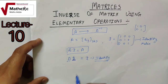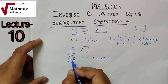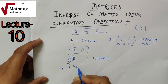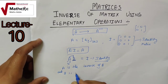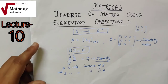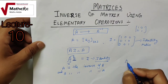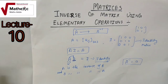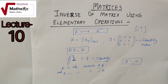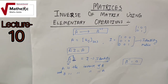For example, if I have two matrices A and B, and A multiplied by B gives the identity matrix, then B is the inverse of A. And you can also say that A is the inverse of B. This is basically the definition of inverse.